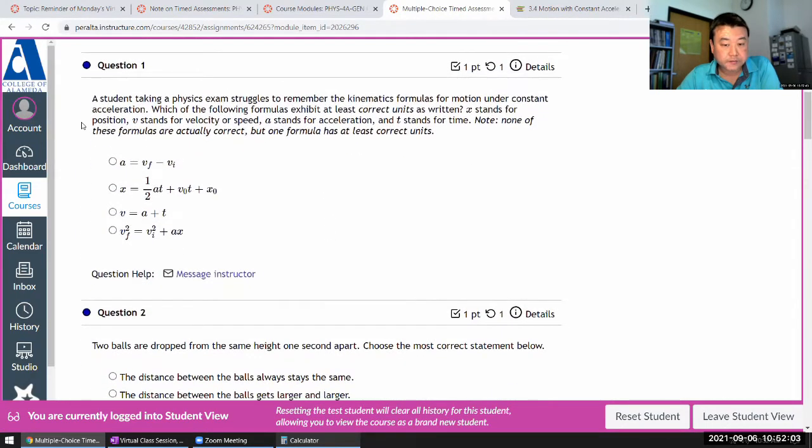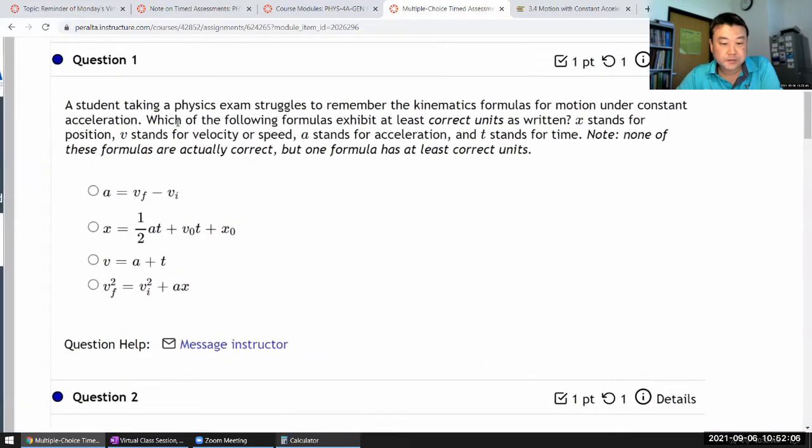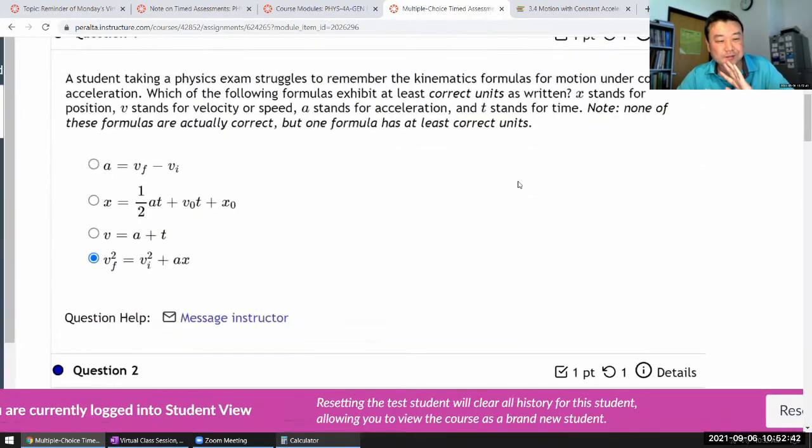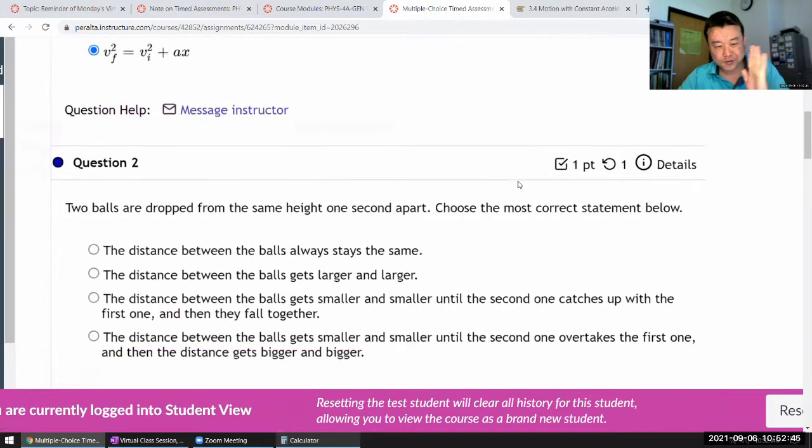Student taking a physics exam struggles to remember kinematics under at least the correct units as written. Right. Yeah. No, no. So I'm looking for, okay, meter per second squared meter per second. So the units are even incorrect here. I can just look at this and know that, oh, that's not going to give me a unit of length. So that's wrong. Same here. This one looks, so I have meter squared per second squared and acceleration times length. That gives me a meter per second squared times meter. So it will be now, yeah, if I have to explain every, I'm going to do the rest of the assessment without explaining so that I can do it under 10 minutes.